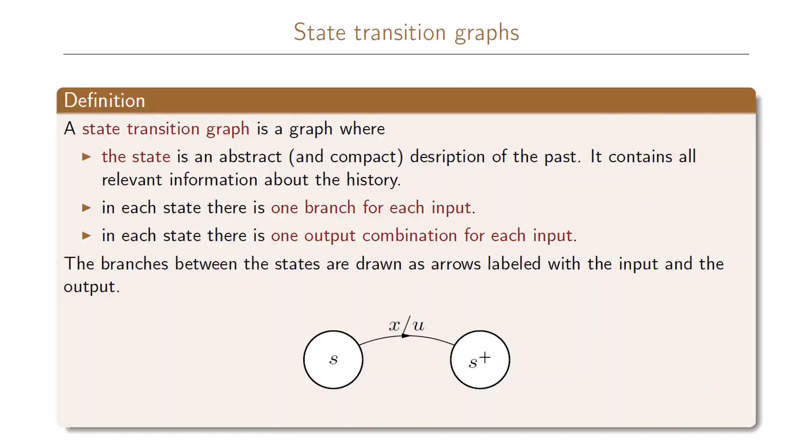The state transition graph is a graph where the state is a description of the past. This state will contain all the relevant information about the history of the system that we need in order to solve our problem. Note that it does not include all the history, only the history that we need to solve our problem.